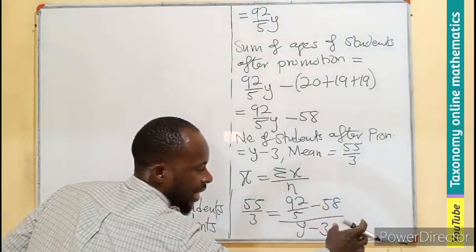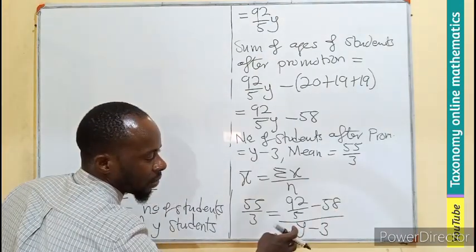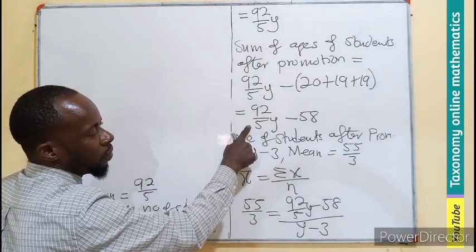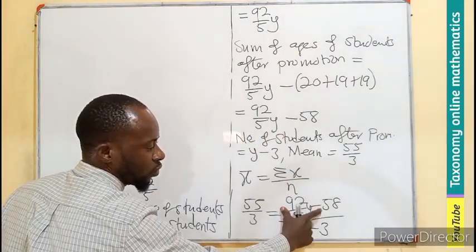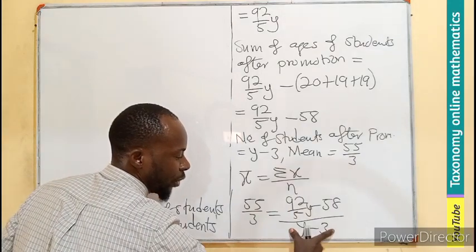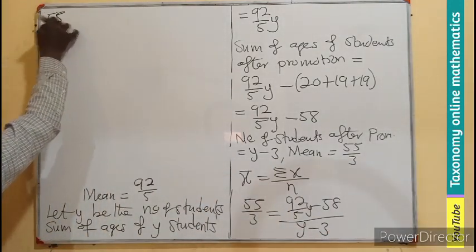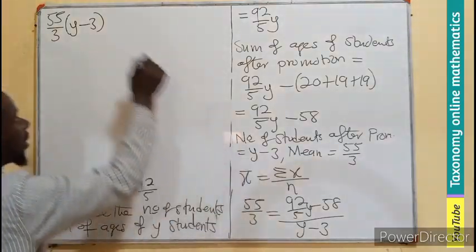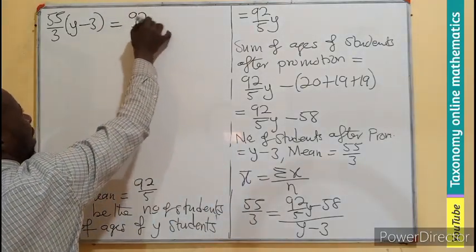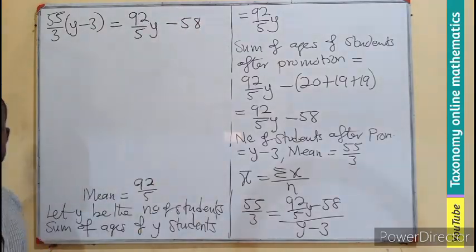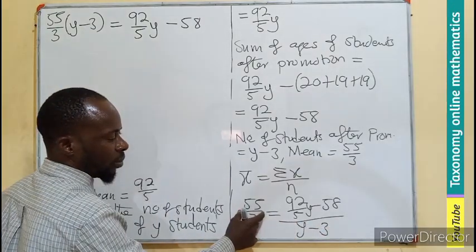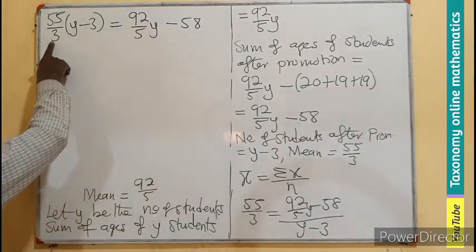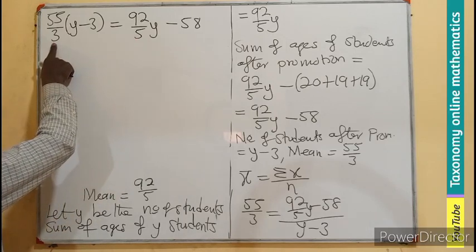When this multiplies here, it will cancel. This will become a linear equation that involves a fraction. Look out for the LCM of the denominators, that will be 15. Therefore, I will have 15 times 55 out of 3 times Y minus 3 equals to 15 times 92 out of 5Y minus 58 times 15.